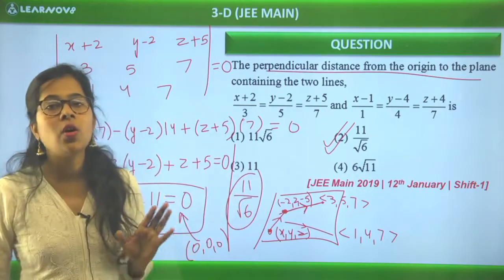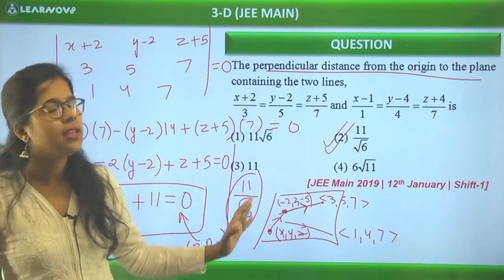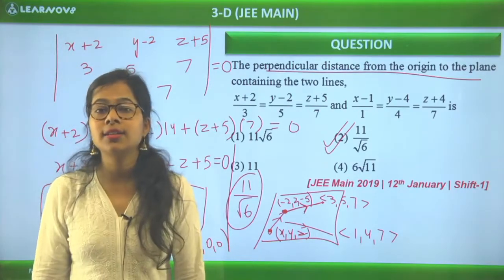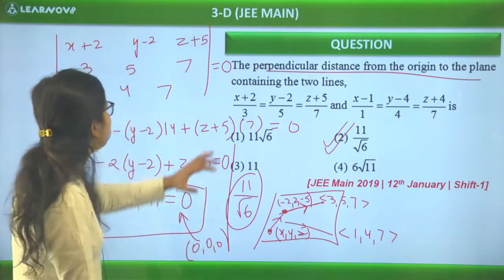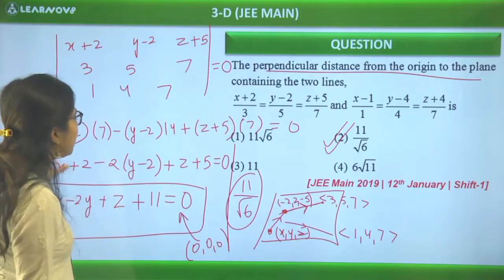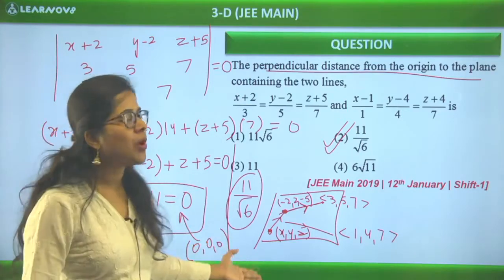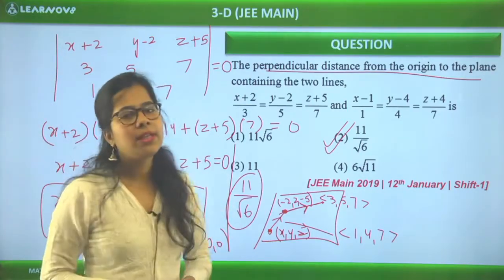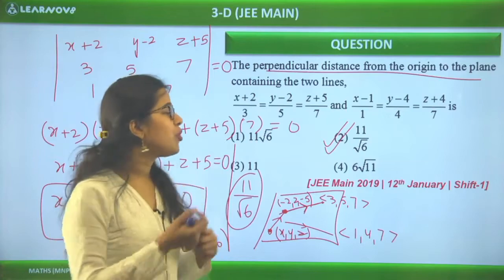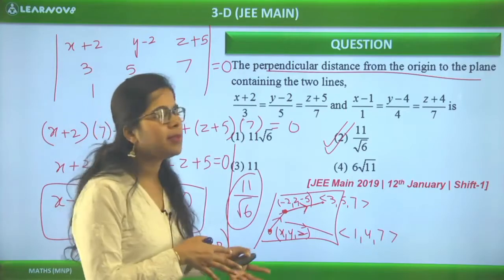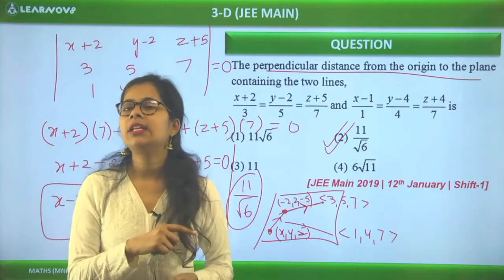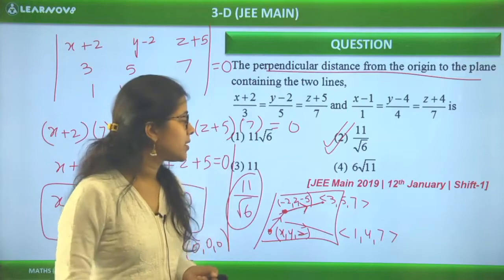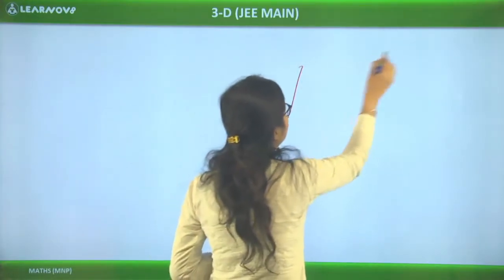This is very straightforward and can be done in under 1.5 minutes. Most of the time goes into solving the determinant; the distance calculation is immediate since the origin gives zero for the x, y, z terms. I'll also show the alternative NCERT approach for comparison.